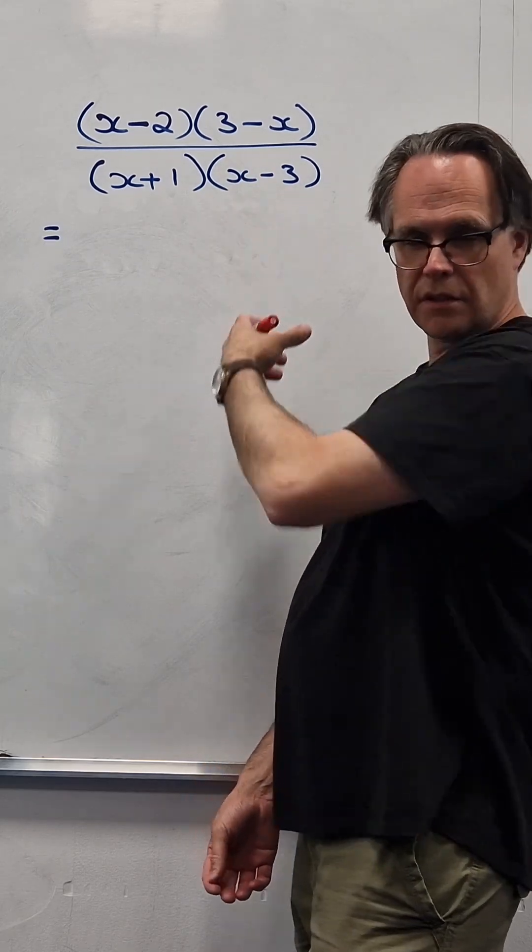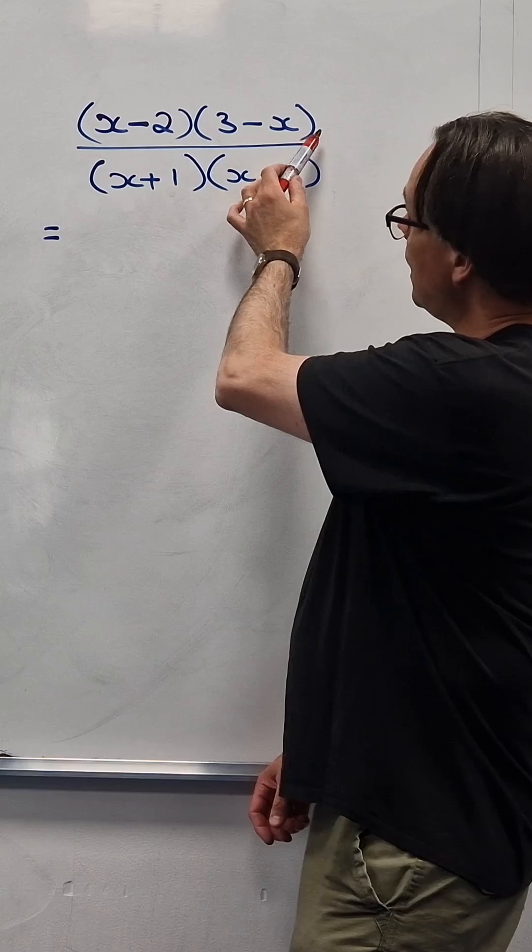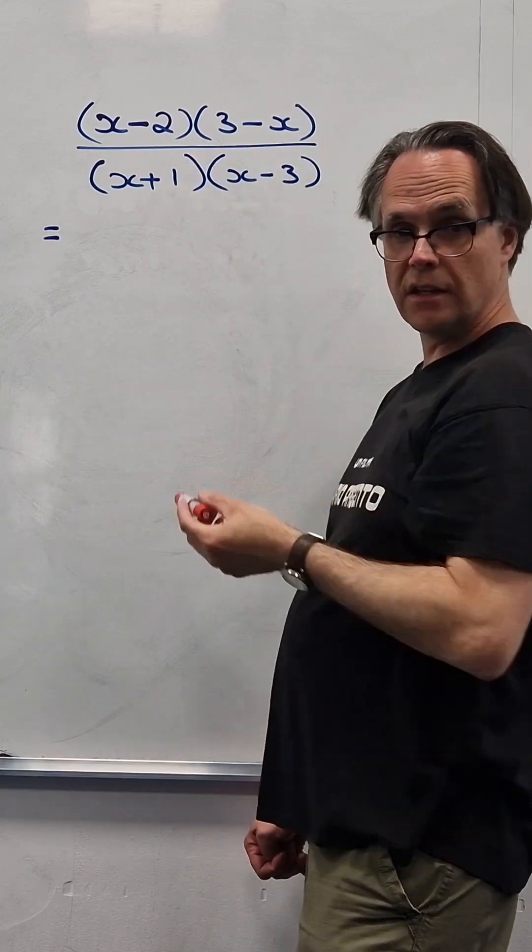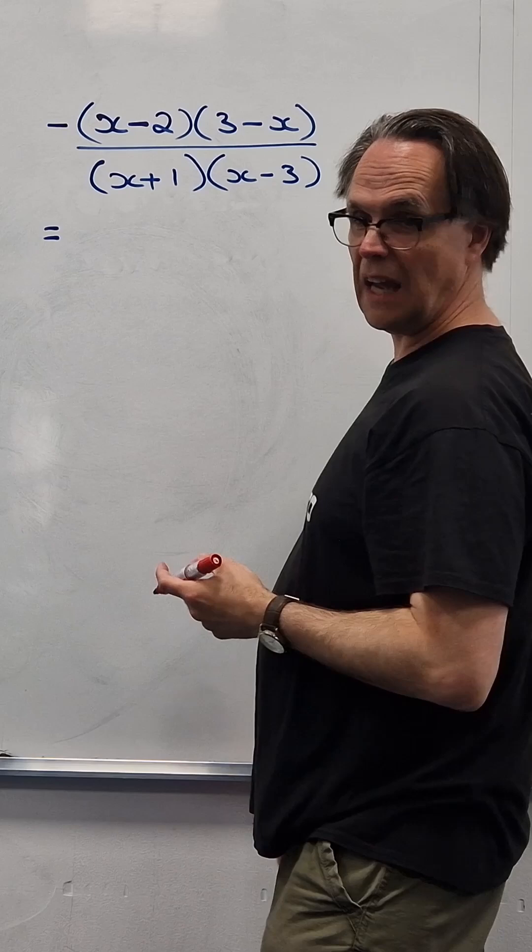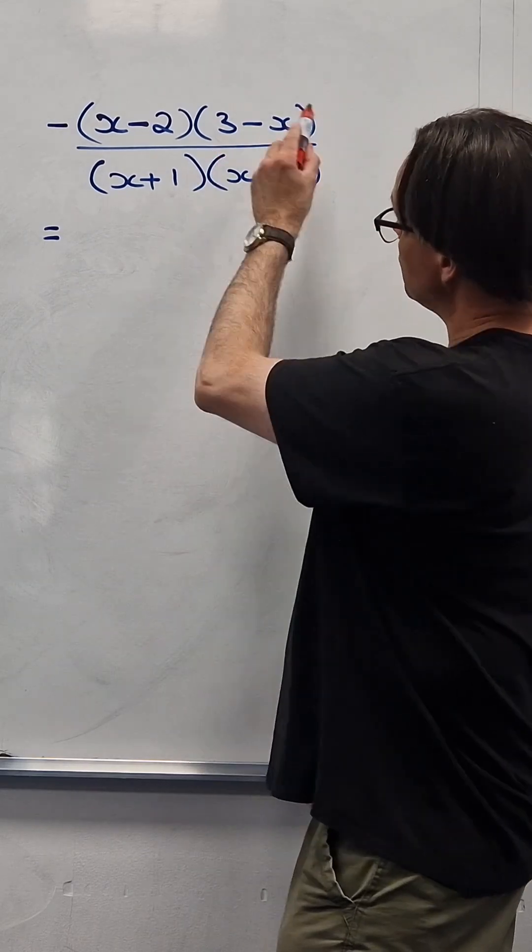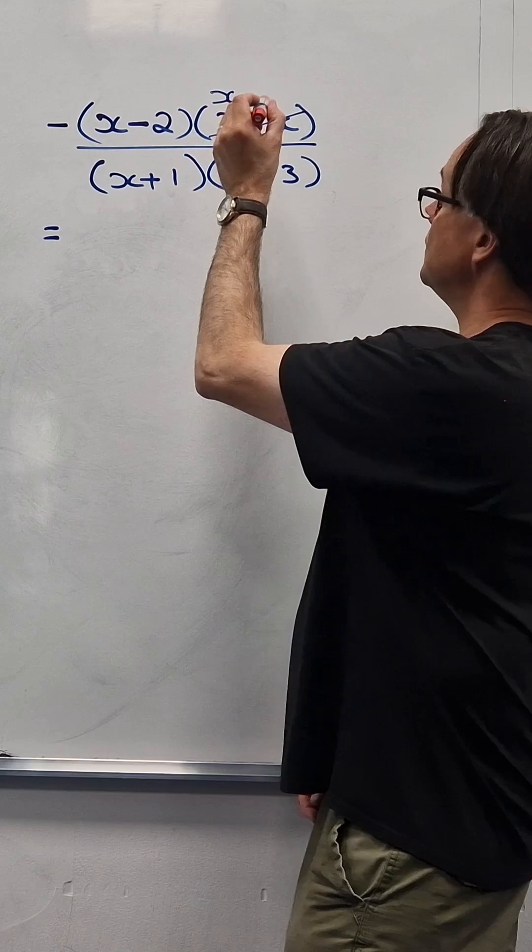You feel like you should be able to cancel them but they're not the same. So what you can do is you can actually take minus 1 out of this bracket as a factor and if I take that out, put this minus out here and what that will do is that reverses the order of the subtraction.